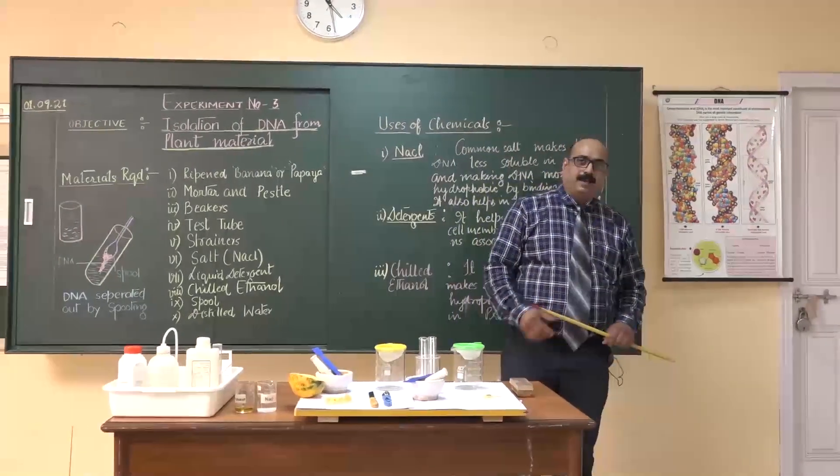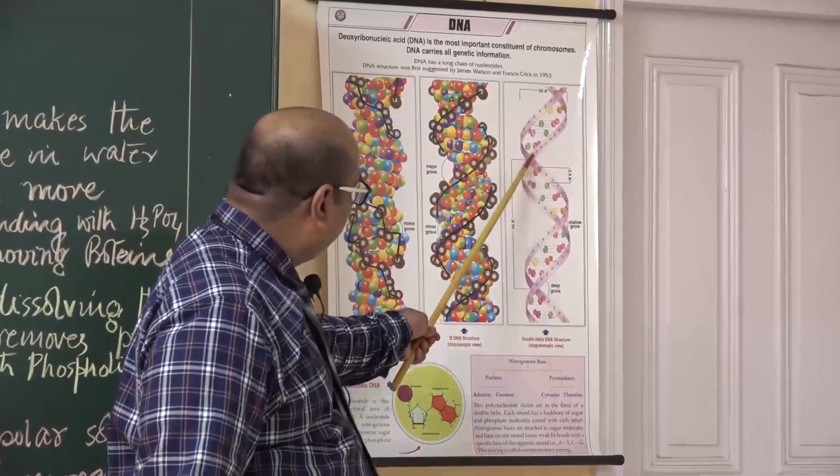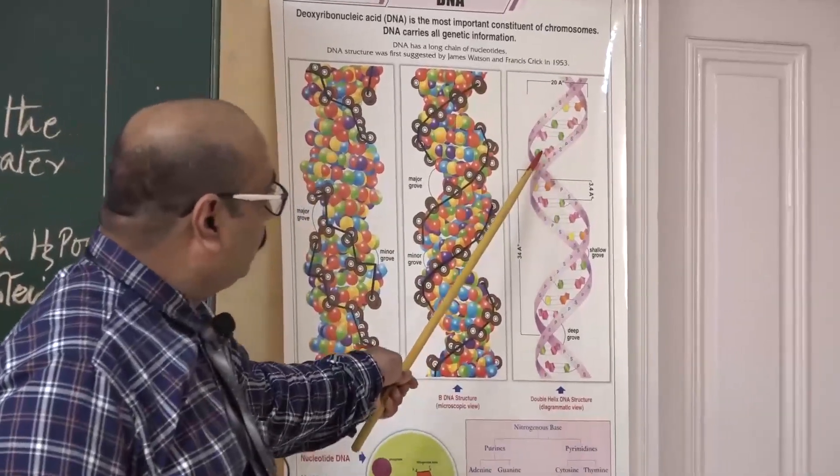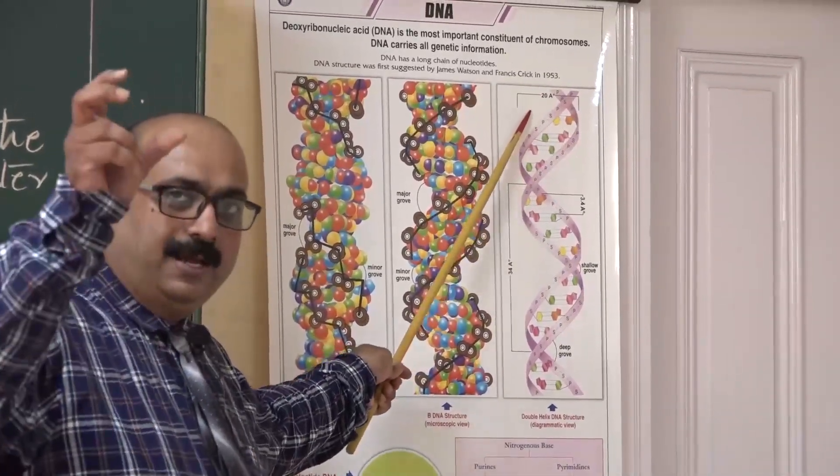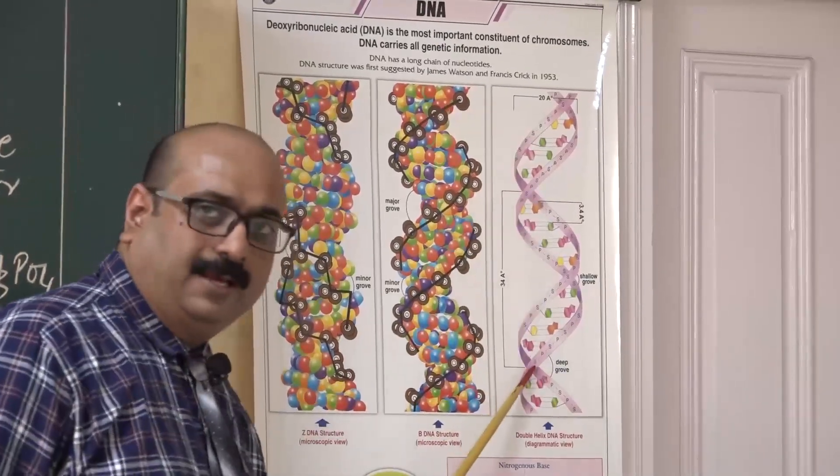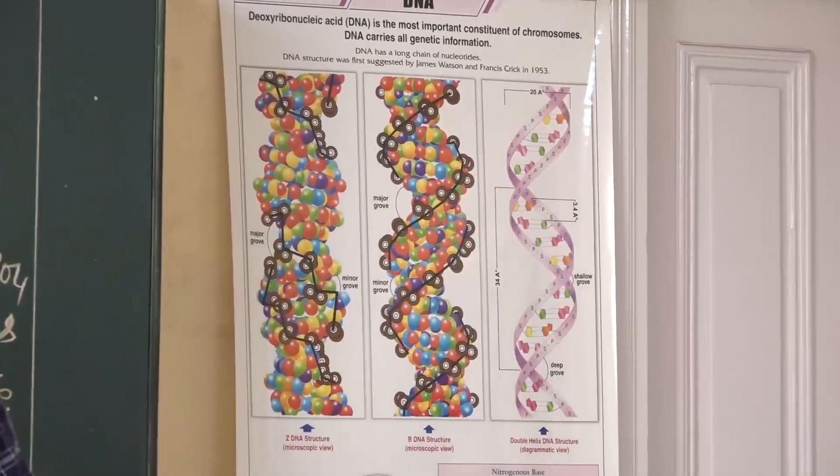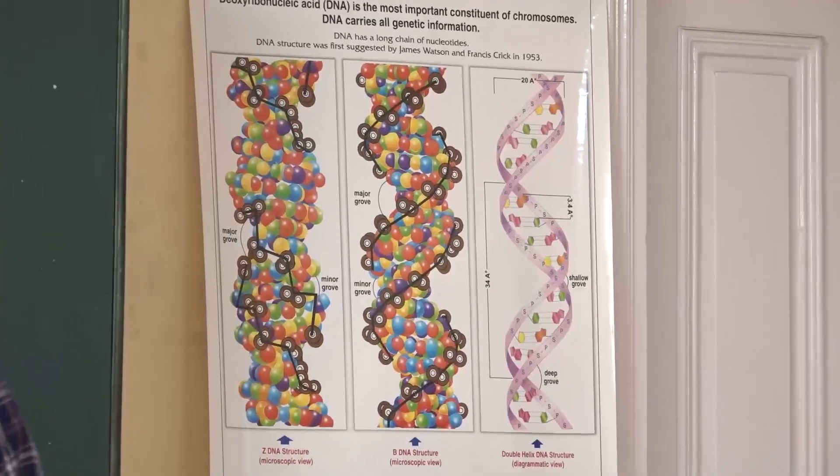It is bound alternately so that it can maintain a universal distance of 20 angstrom of the two skeletons. This means purine always binds with pyrimidine, and pyrimidine binds with purine.